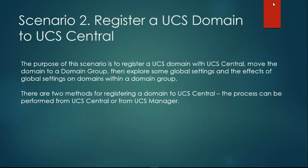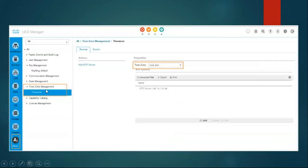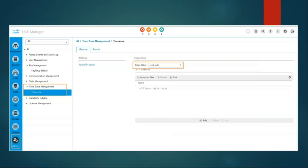Scenario number two: register a UCS domain to UCS Central. In this case, we'll learn how to attach or register a UCS Manager to UCS Central. The process can be performed from either UCS Central or UCS Manager. You'll need to check the NTP time zone because NTP synchronization is a mandatory step. Once you register your UCS Manager with UCS Central, whatever changes you make according to policy inside UCS Central will reflect inside the UCS Manager.